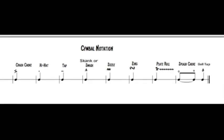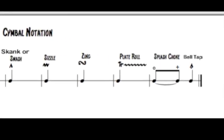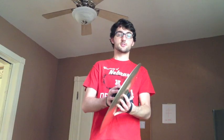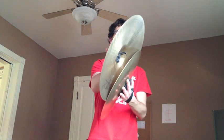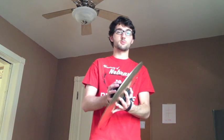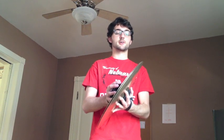Then we have the splash choke, which is denoted with a circle and then a plus sign. The circle is the initiation of it and then the plus sign is the choke. So this would be the circle, and then the bringing back is the plus sign. If you were to do it as it's written it would just sound like this.